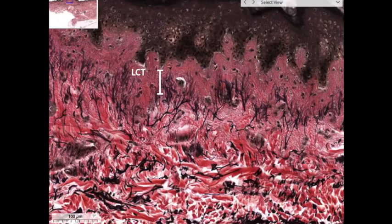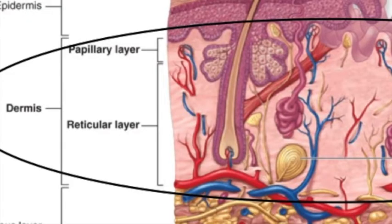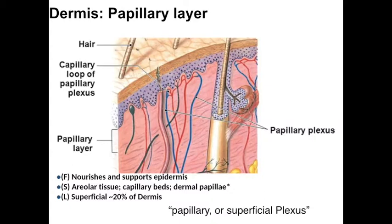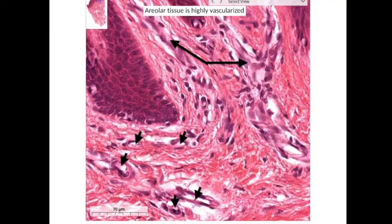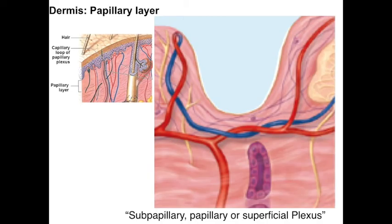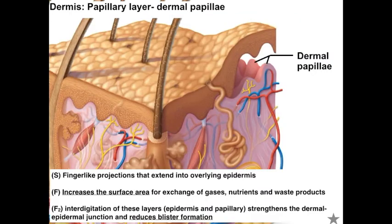The dermis has two sub-layers based on location and type of connective tissue. The superficial 20% is called the papillary layer, which is areolar tissue with a fine capillary network that nurses and supports the epidermis. Filtrate from these capillaries diffuses through the substrate of loose connective tissue to the overlying epidermis. The surface area between the papillary layer and epidermis is greatly increased by projections called dermal papillae, which allow more exchange of gases, nutrients, and waste, and also strengthen the dermal-epidermal junction.